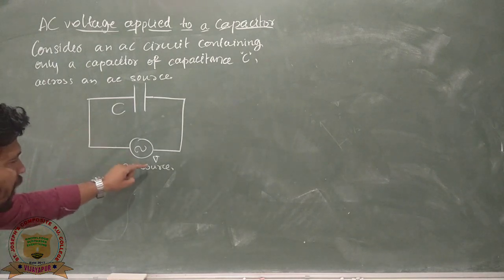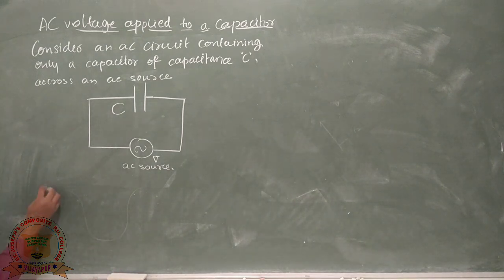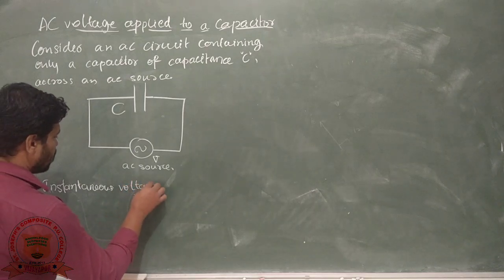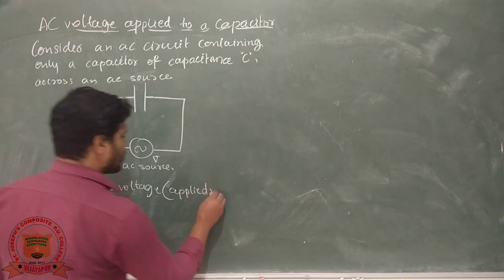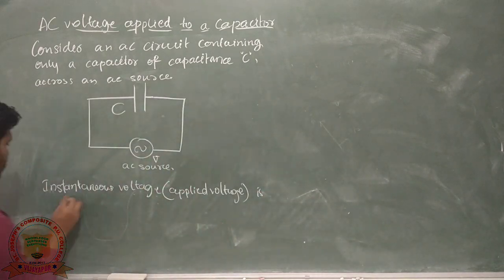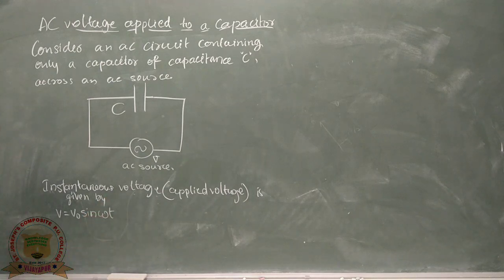The instantaneous voltage applied to the capacitor is given by the equation V equals V₀ sin(ωt). This is equation number 1. The instantaneous applying voltage is given by V equals V₀ sin(ωt).